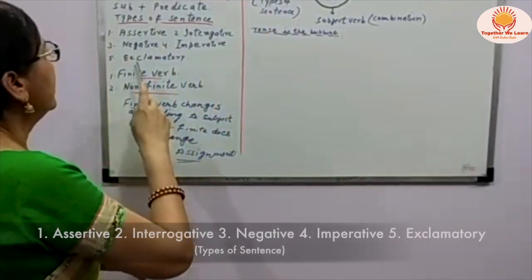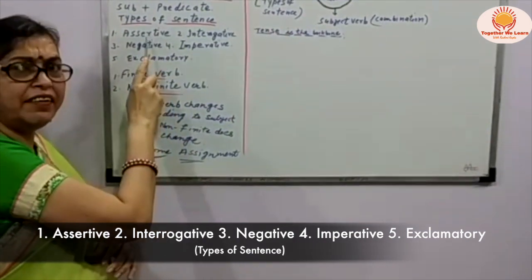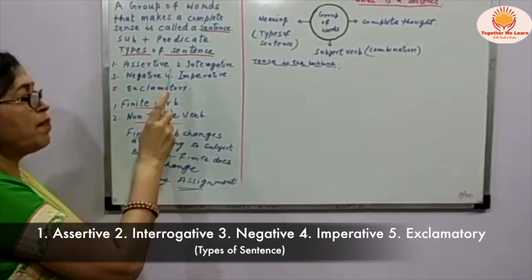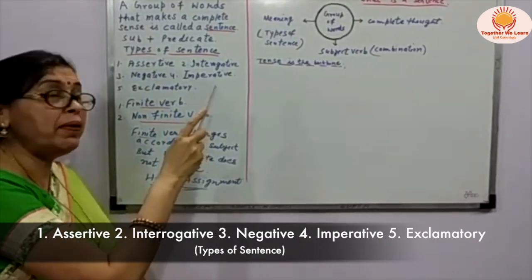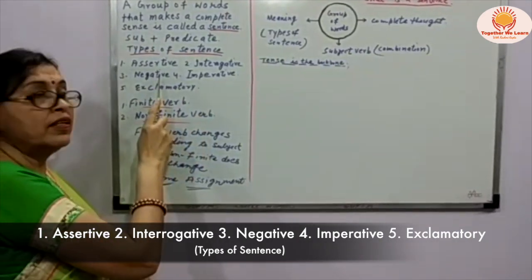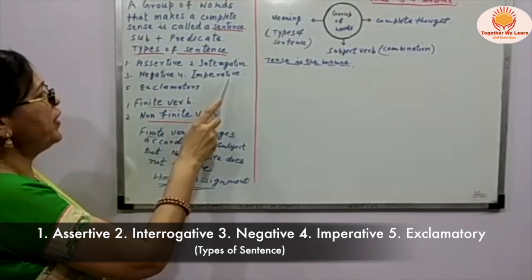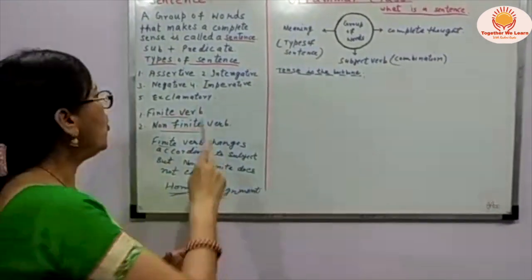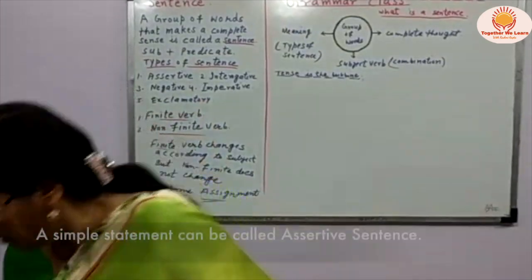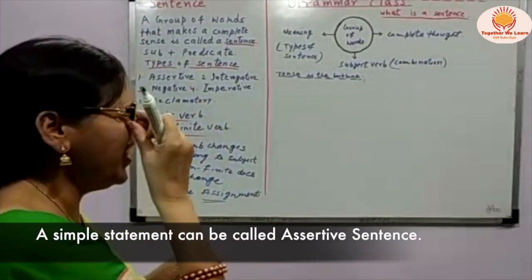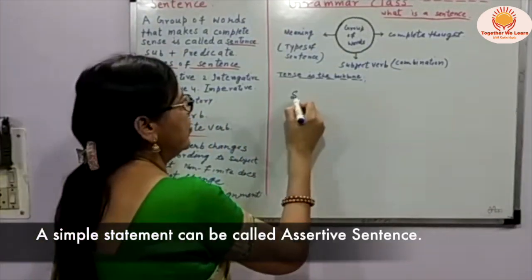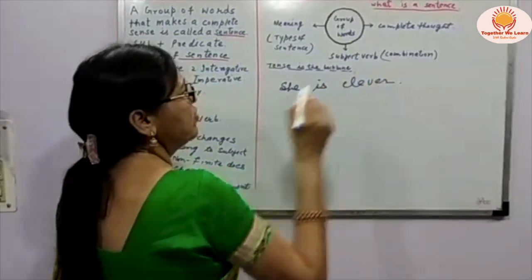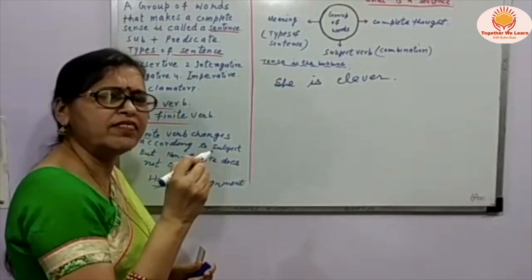First of all — assertive, simple, interrogative. I have told you about this. Then negative, imperative, exclamatory. So assertive — I will write for you now. 'She is clever.' Just a statement is there. Simple sentence. Assertive.